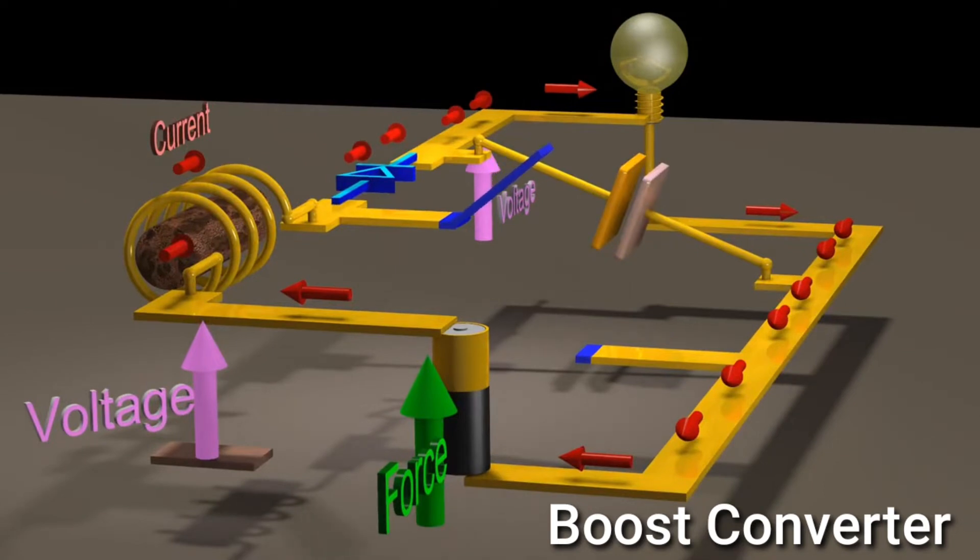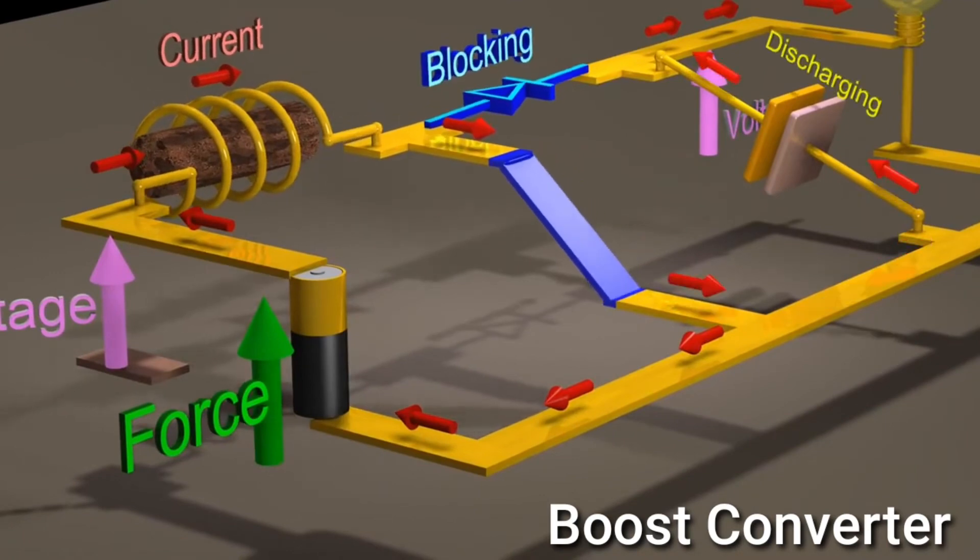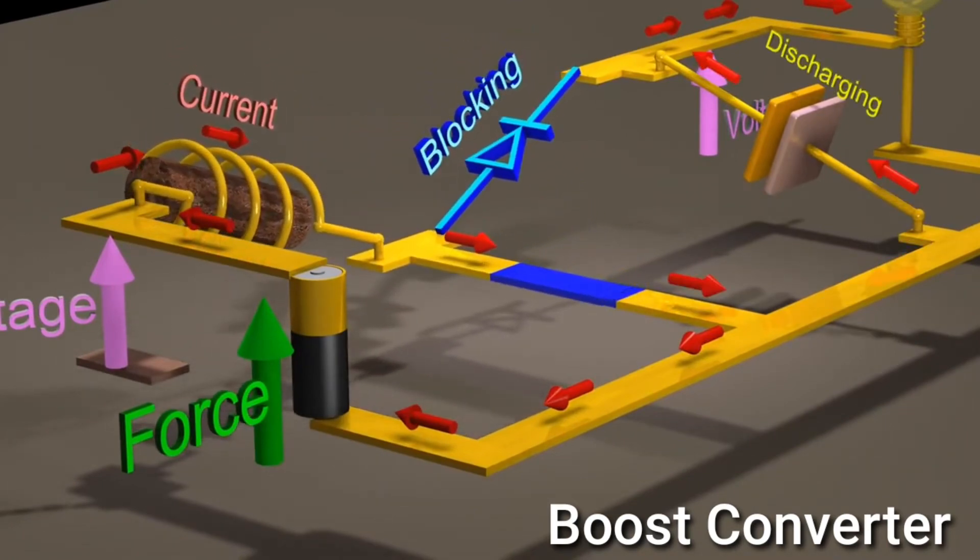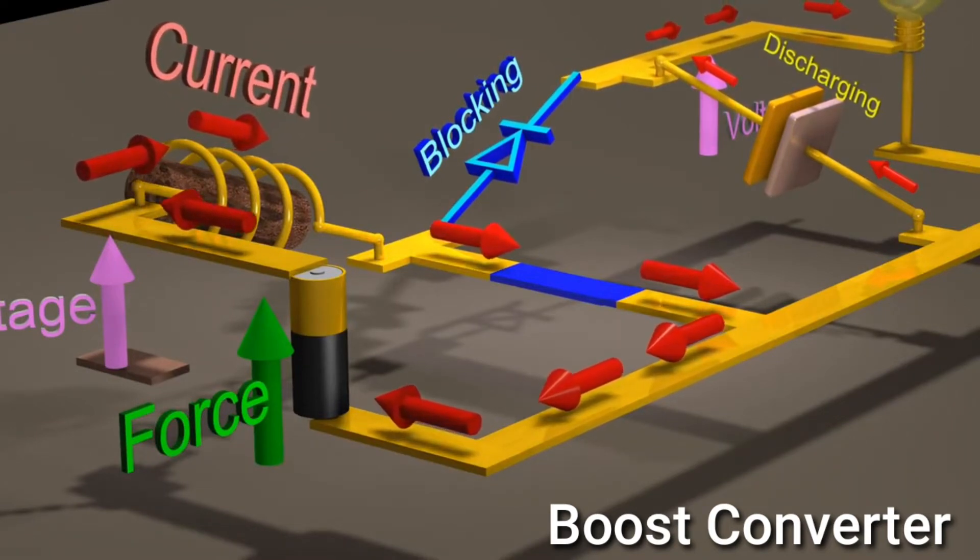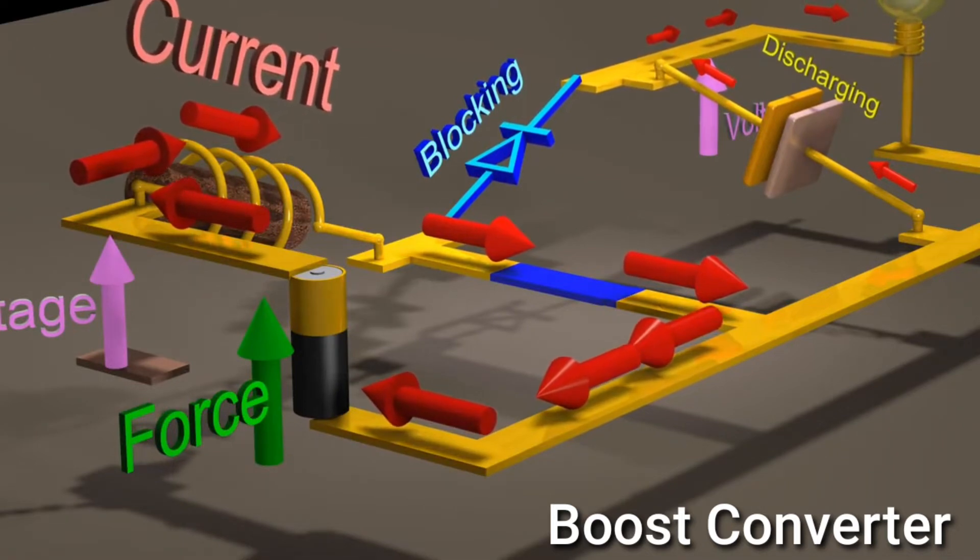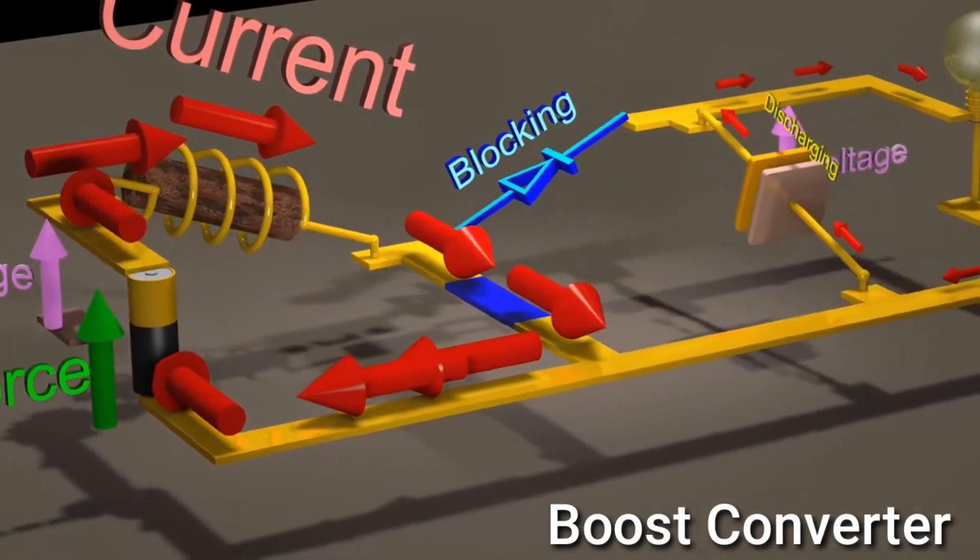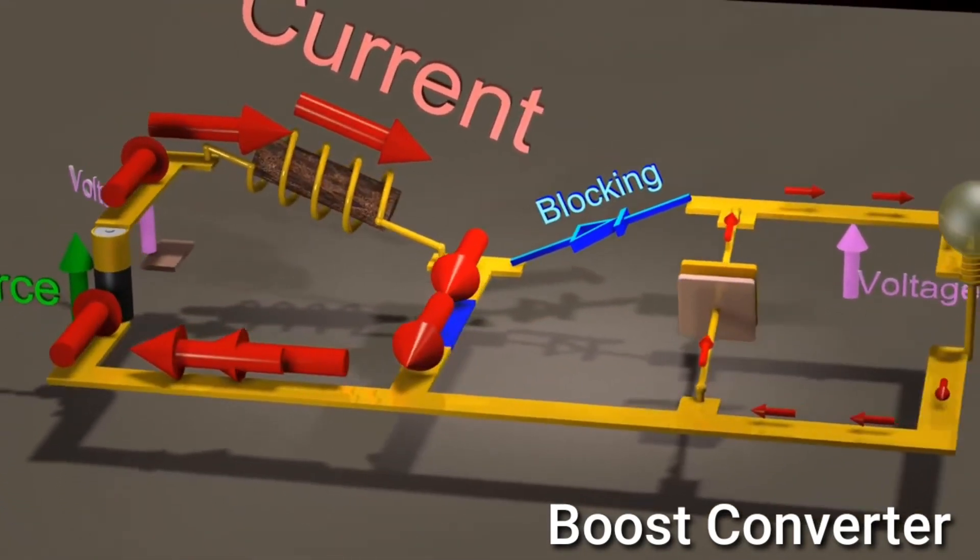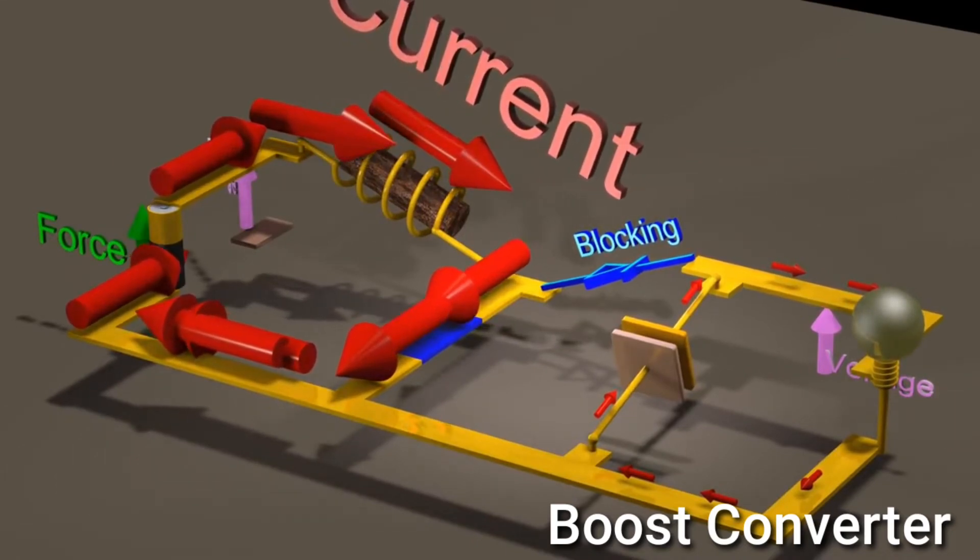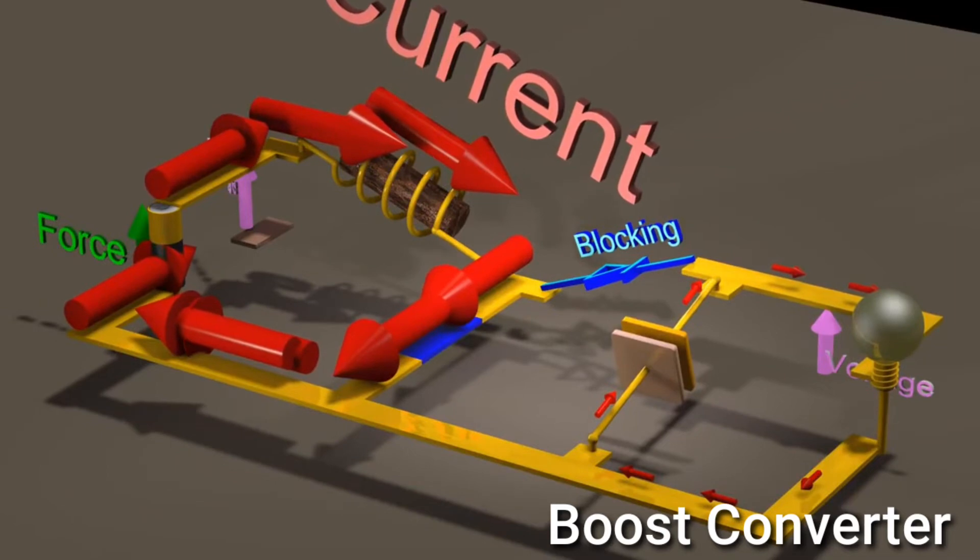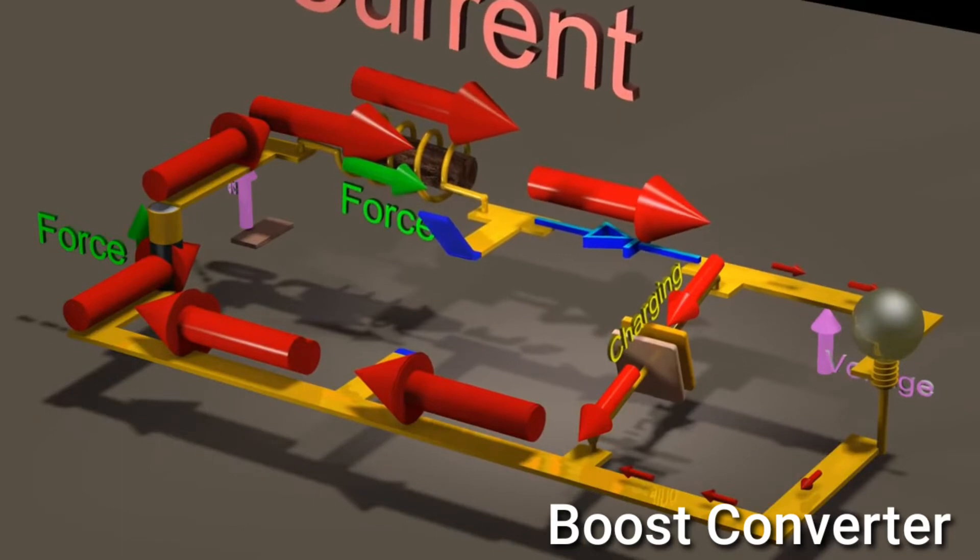What if we instead have the switch on most of the time? If the switch is almost always on, then assuming we have ideal components, the current will theoretically keep increasing to infinity. During the brief time we turn the switch off, an infinite current will charge the capacitor to an infinite voltage.